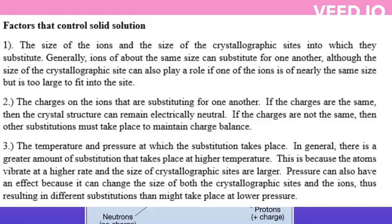The second factor is the charges on the ions that are substituting for one another. If the charges are the same, then the crystal structure can remain electrically neutral. If the charges are not the same, then other substitutions must take place to maintain charge balance.